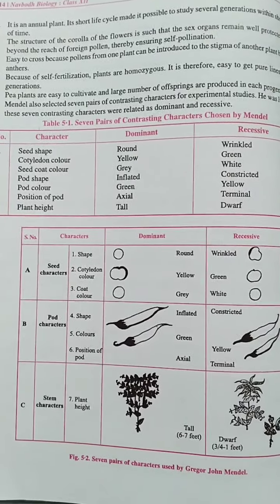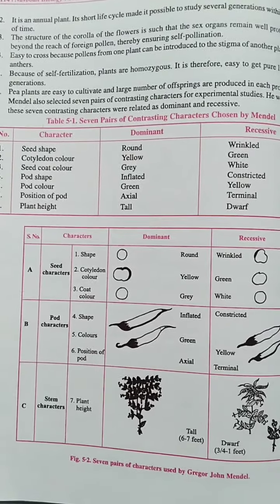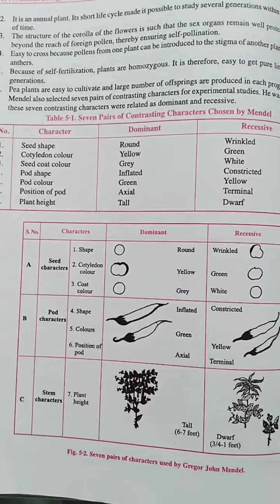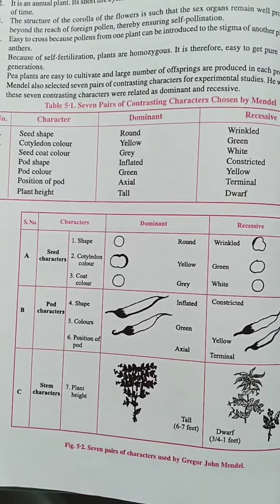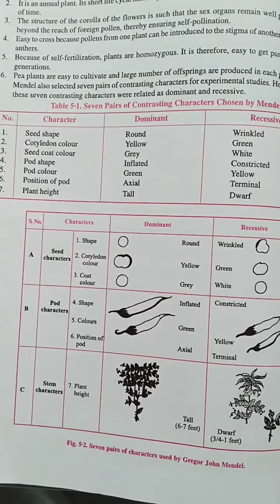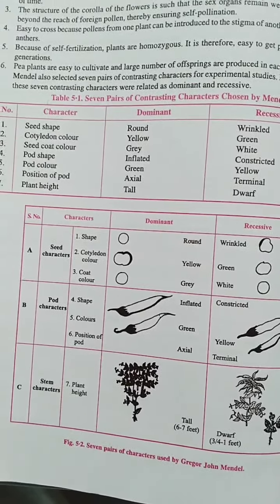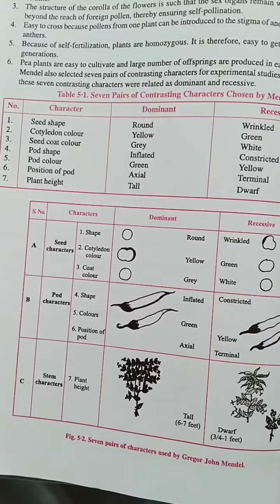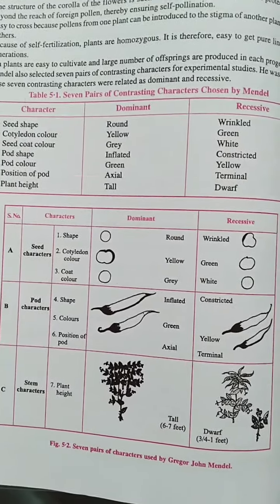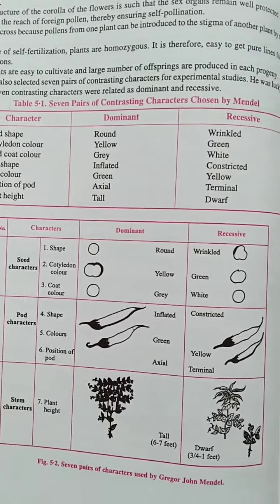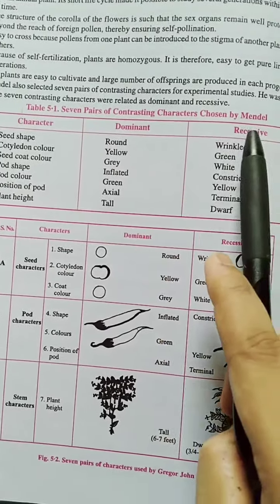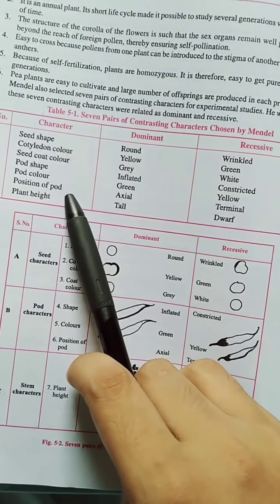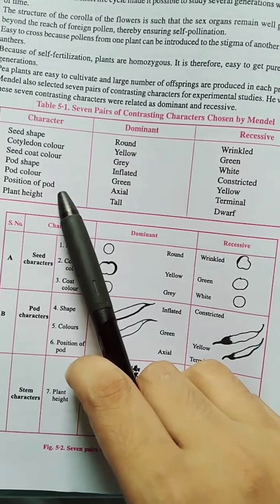Dominant and recessive alleles interact with each other in different ways — that means how they will express themselves. To correctly explain these situations, the scientist who first correctly experimented was Gregor Johann Mendel, who is known as the father of genetics. He worked on seven pairs of contrasting characters in the pea plant (garden pea).